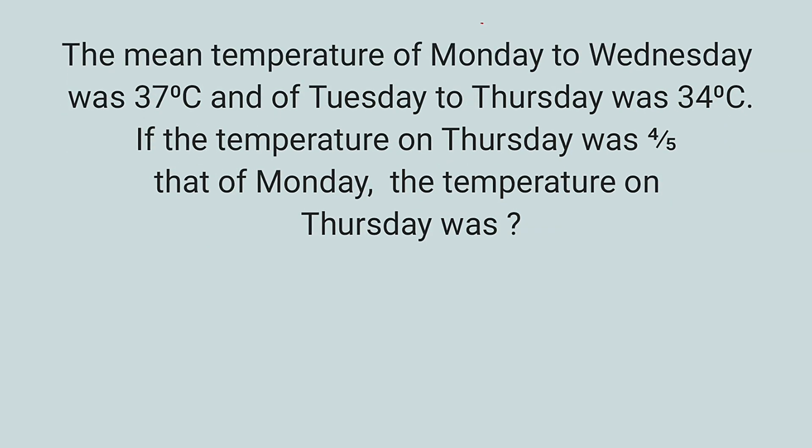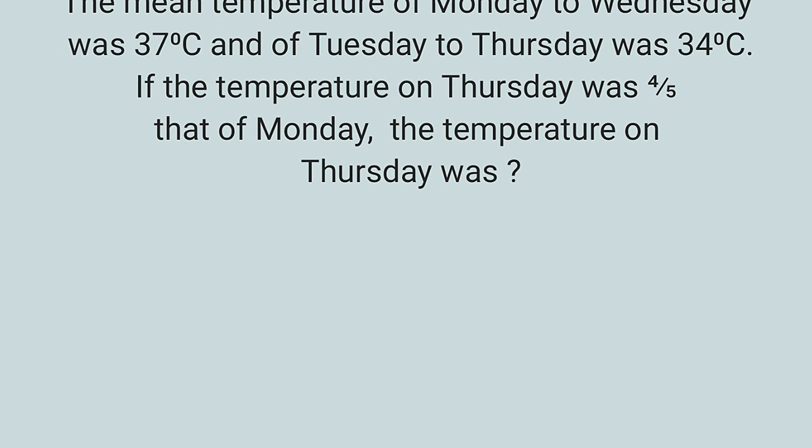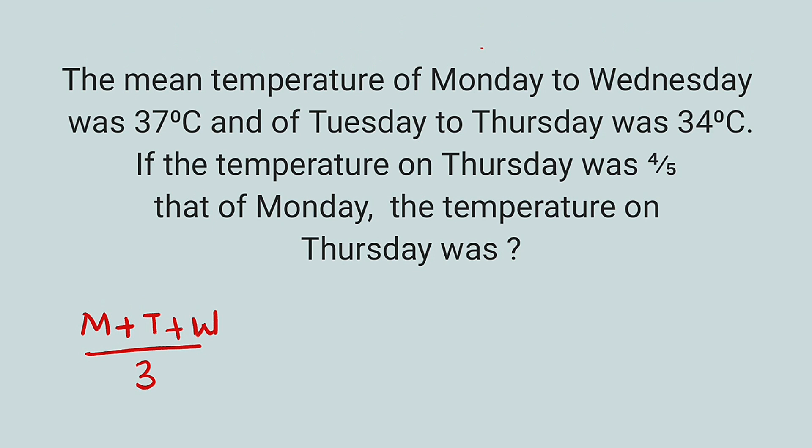So let's declare Monday with M, Tuesday with T, and Wednesday with W. So we have M plus T plus W divided by three. And we have seen that from the question, the mean temperature was 37 degrees Celsius. So we have to equate this to be 37.